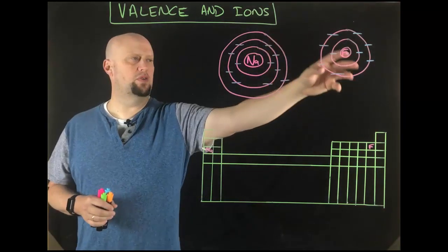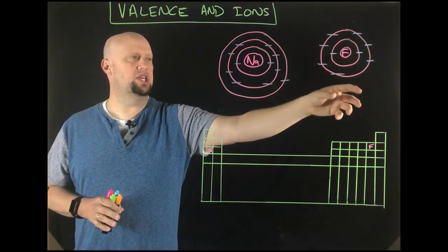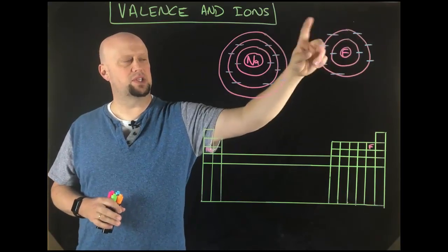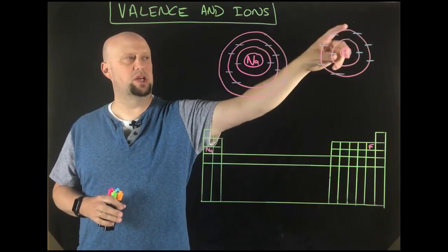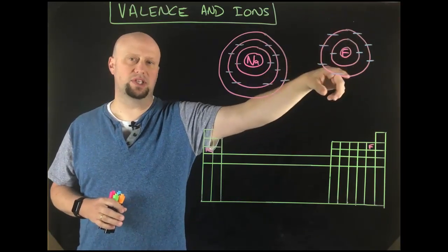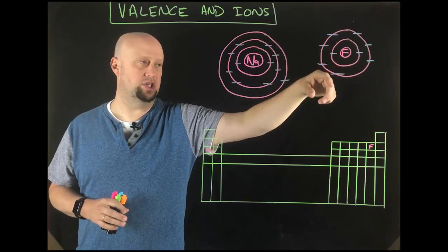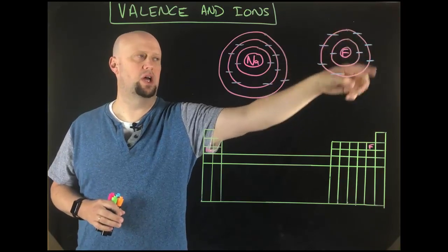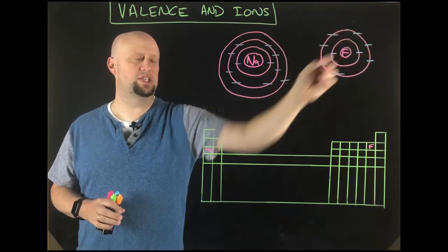If we look over here at fluorine, we can see that fluorine has seven valence electrons because its highest energy level is the second energy level — two in the first level, seven in the second.